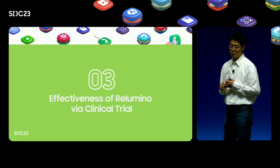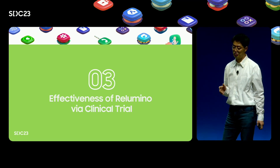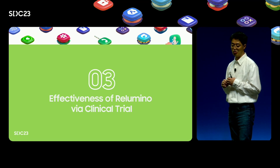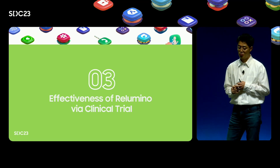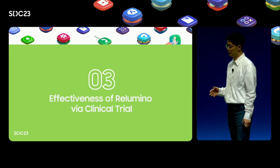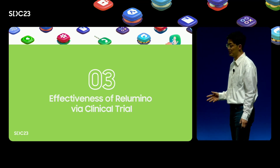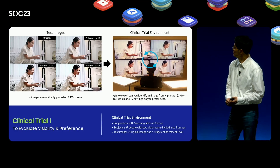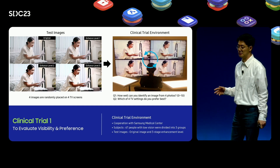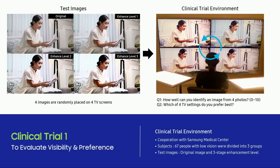When Rilumino mode is applied to video, it is necessary to make sure that it actually helps people with low vision watch TV. So while developing Rilumino, we also conducted clinical trials to verify its effectiveness. We conducted clinical trials in collaboration with researchers at Samsung Medical Center, who have extensive experience in visual clinical trials. 67 low vision patients were recruited for the clinical trial, divided into three groups based on the degree of visual impairment.